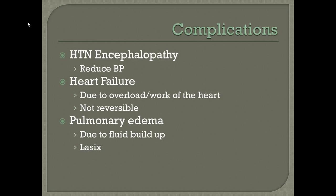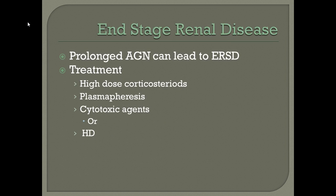Potential complications include hypertensive encephalopathy due to long-term hypertension, so we want to reduce blood pressure. Heart failure is a common complication due to the overwork of the heart from additional fluid volume, and it is not reversible. Pulmonary edema from fluid buildup and osmosis issues can be treated with Lasix. Prolonged acute glomerulonephritis that is not effectively treated can lead to end-stage renal disease. These patients may require high-dose corticosteroids, plasmapheresis to clear lock-and-key complexes from the plasma, cytotoxic agents, or hemodialysis.